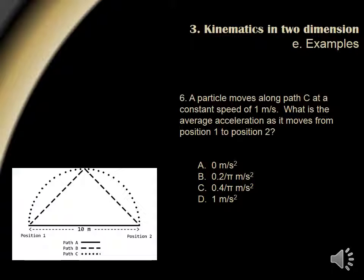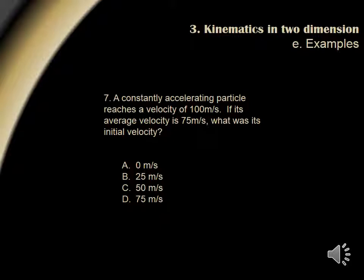Question 6. A particle moves along path C at a constant speed of 1 meter per second. What is the average acceleration as it moves from position 1 to position 2? Realizing acceleration is a result of a change in velocity or speed, we see that if the particle moves at a constant speed, its acceleration must be 0. Thus, answer choice A is the correct answer.